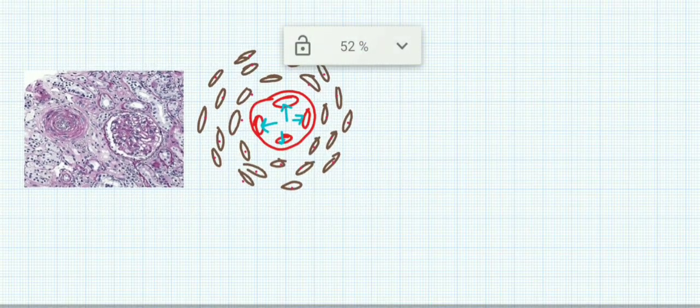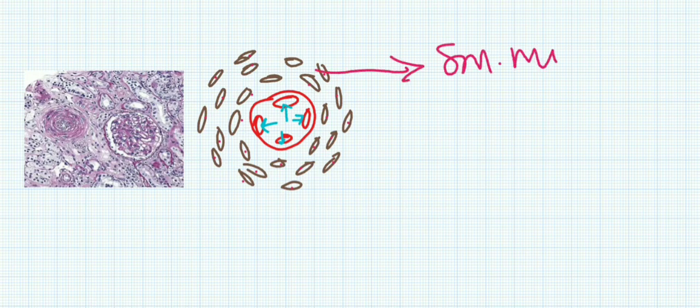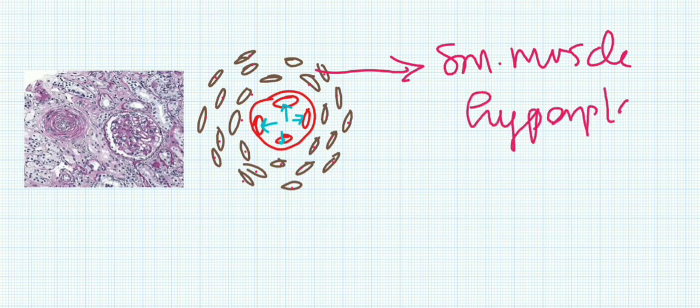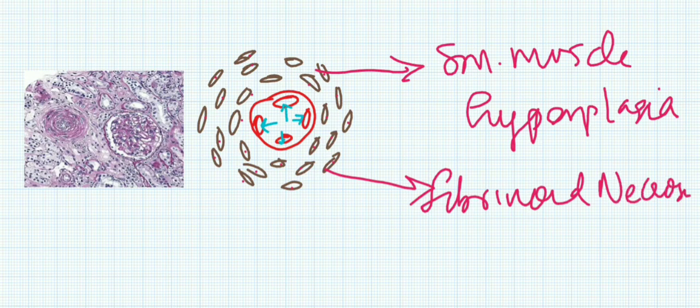As a whole, what are the things you can see here? First, smooth muscle hyperplasia. Then, fibrins will be released, so there will be fibrinoid necrosis. As a whole, this total appearance is the onion skin appearance.